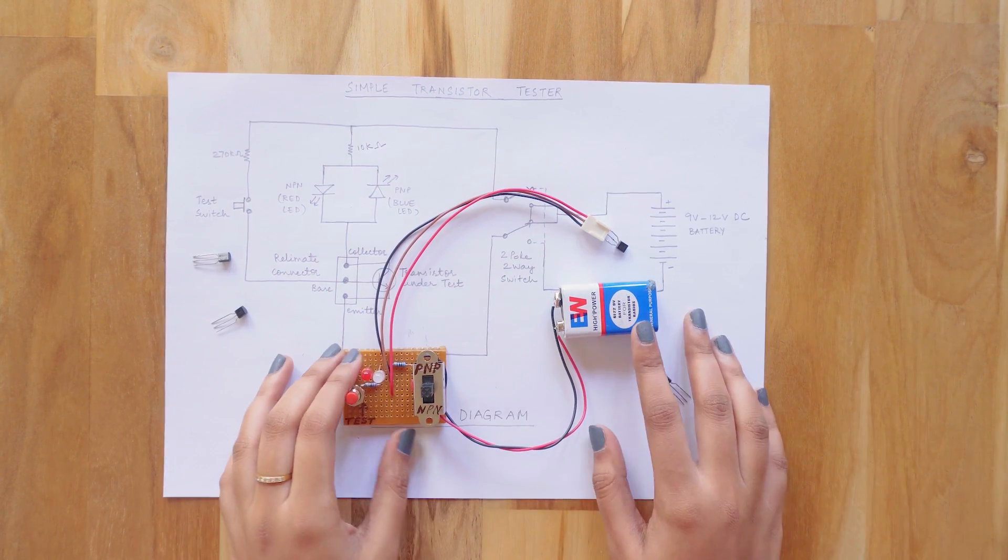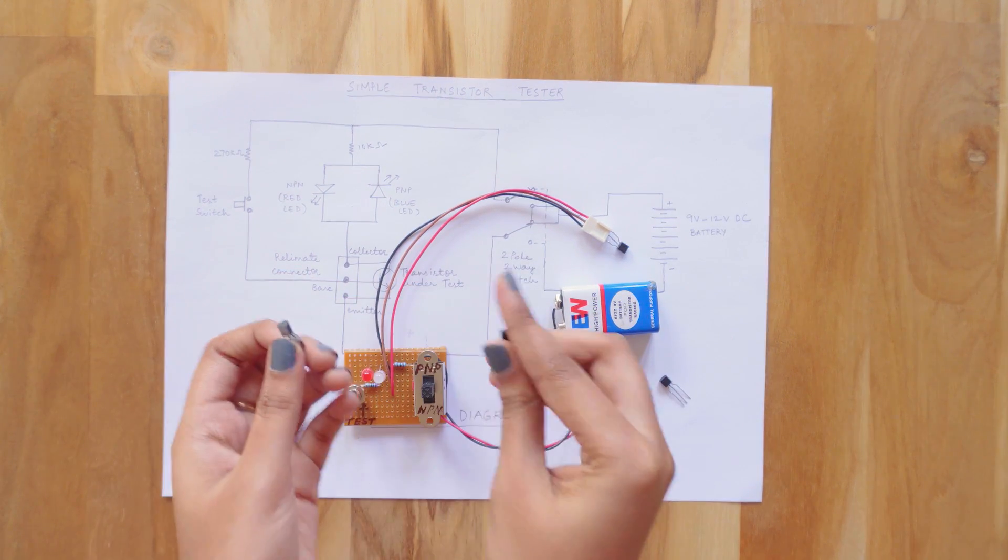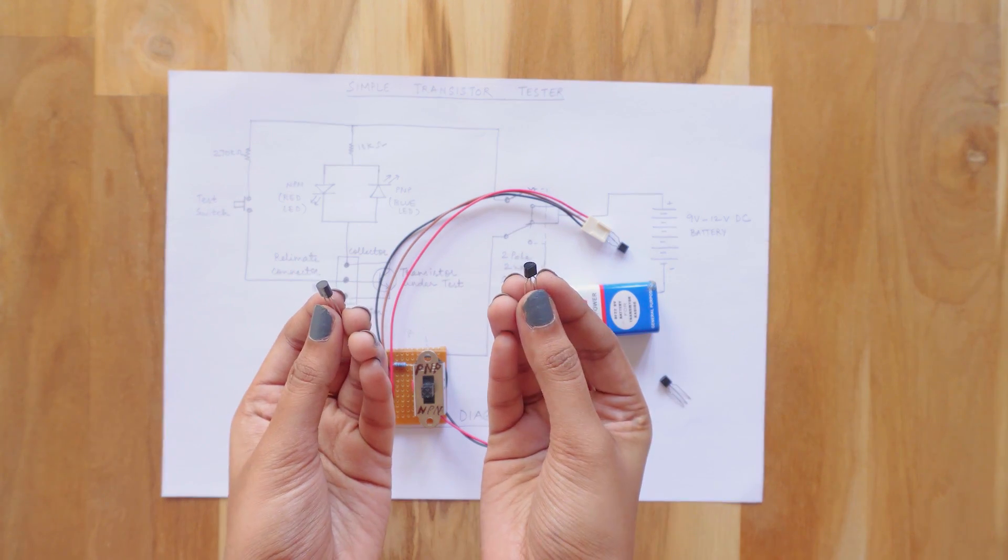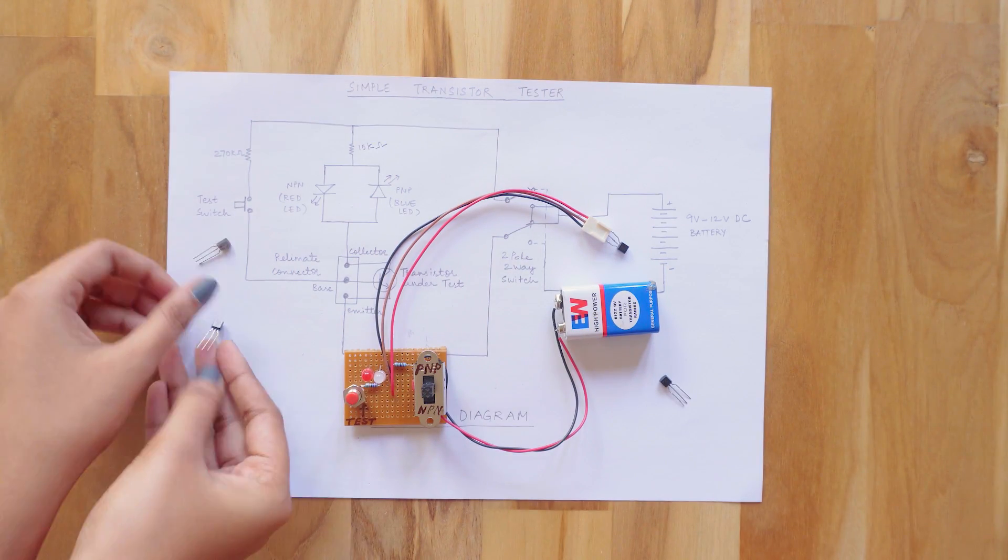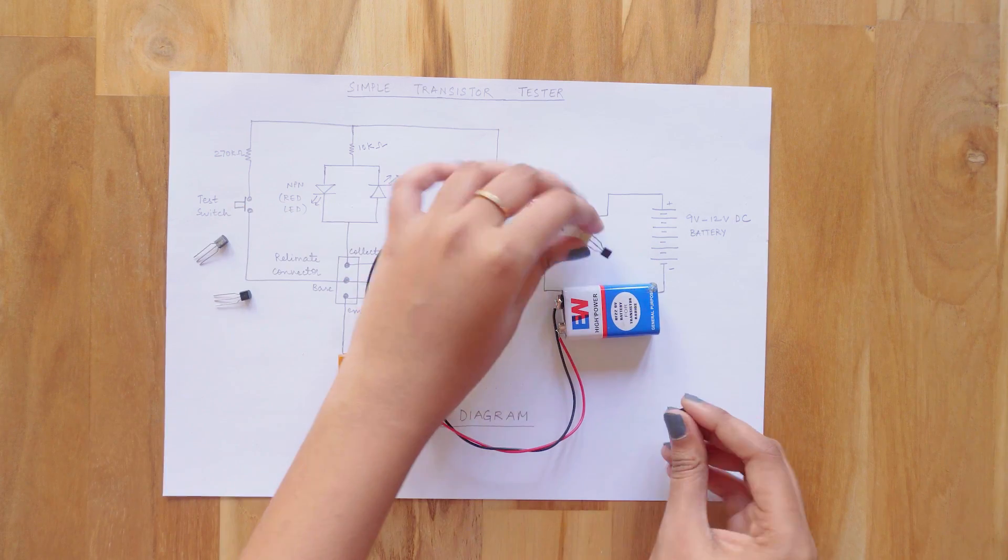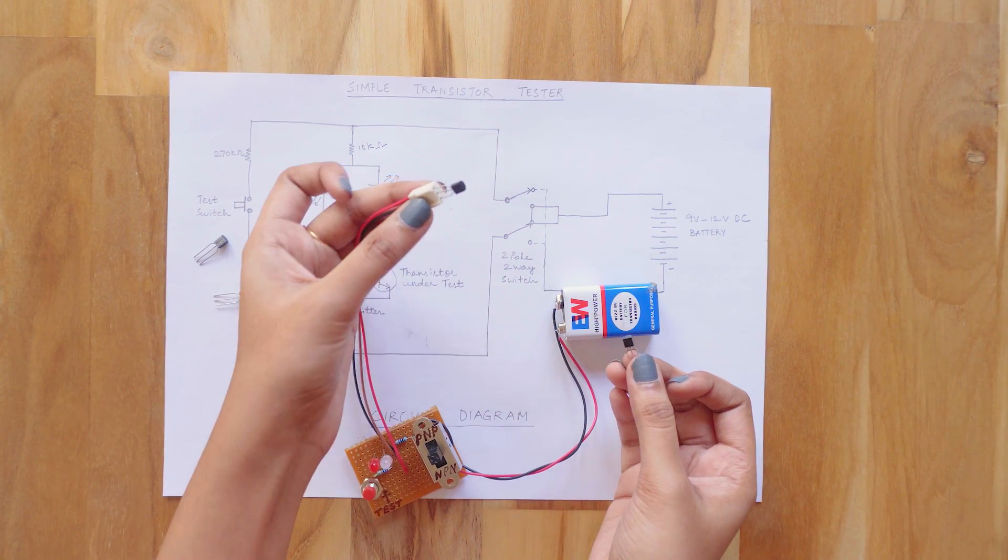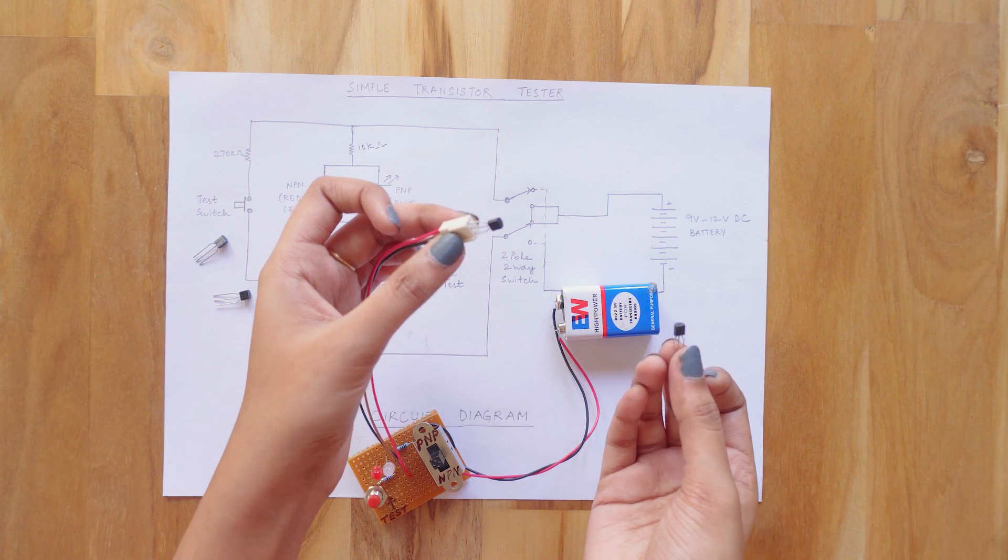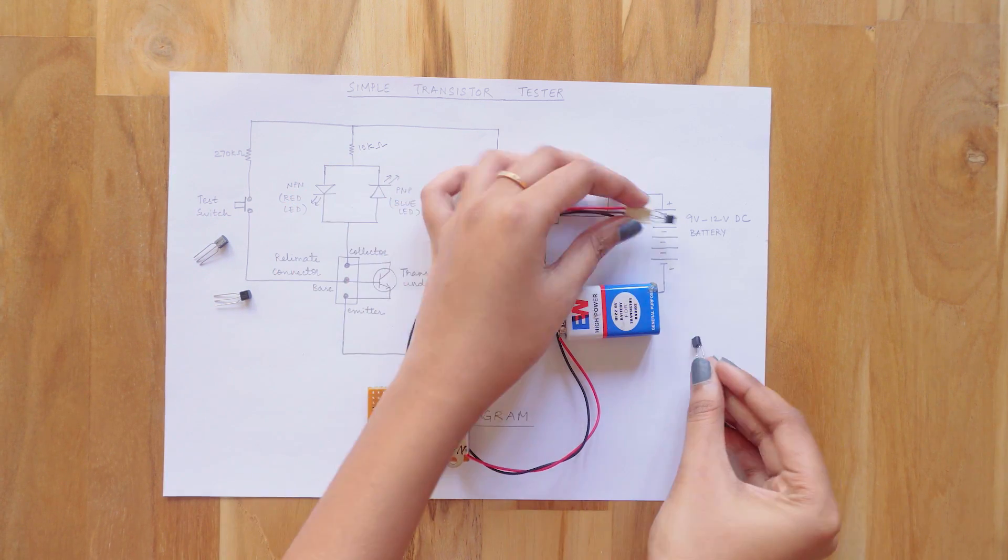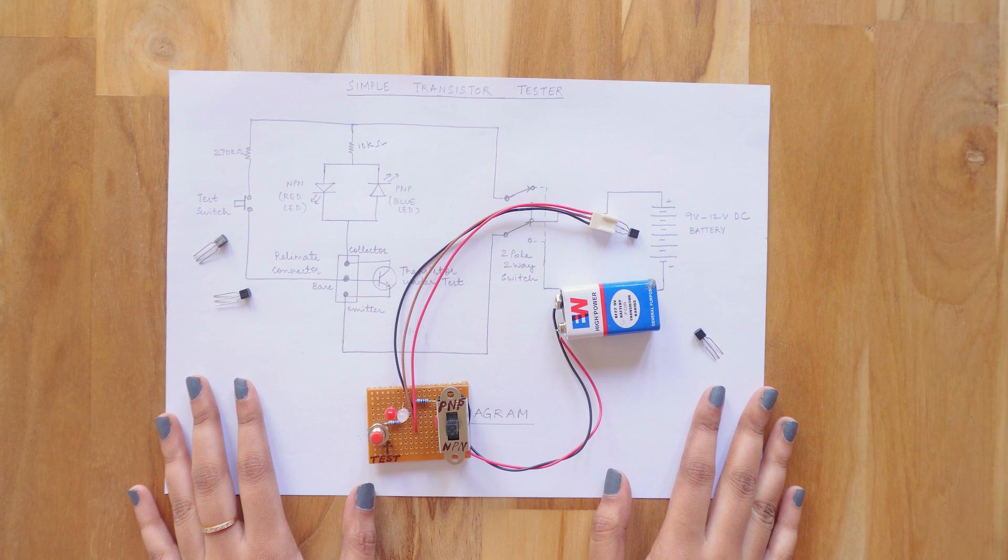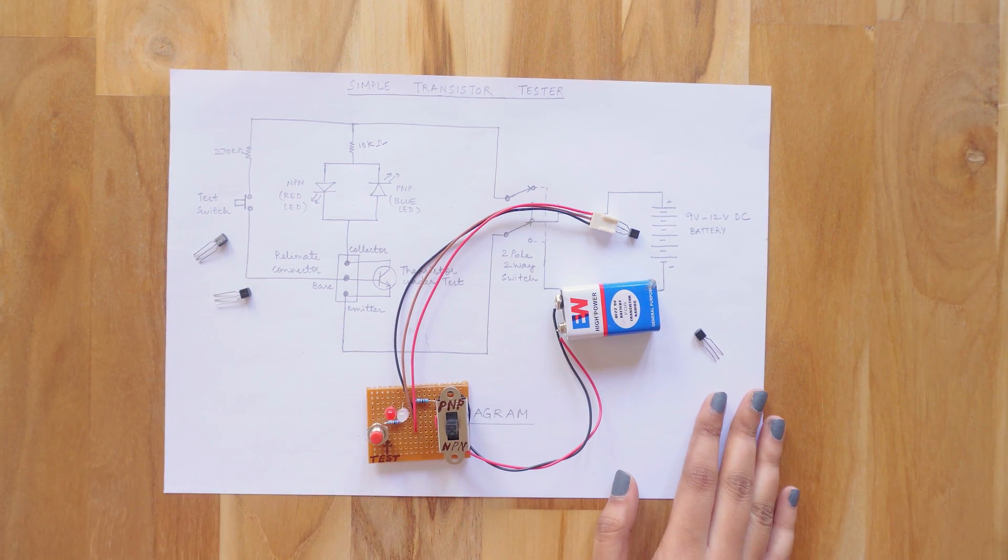So guys using this transistor tester we could easily find out that these two were good transistors in which one was PNP and the other was NPN and they were working fine. And the remaining two were the faulty ones in which one is short-circuited and the other is open-circuited. This is a very simple method and it's also time saving. I also have another method of testing a transistor directly on the PCB which I'll be showing you in my future videos. So stay tuned to my channel.